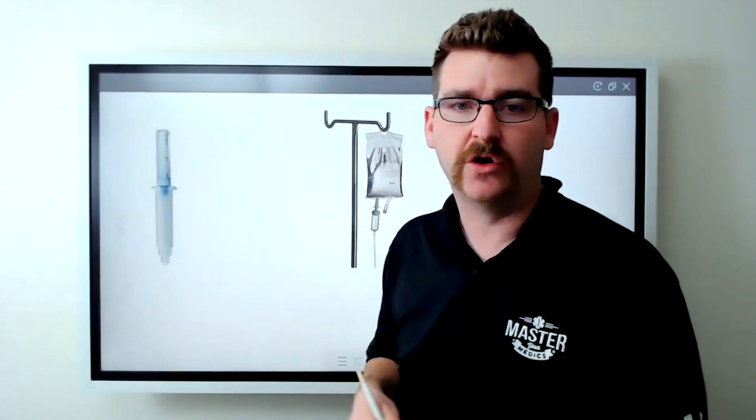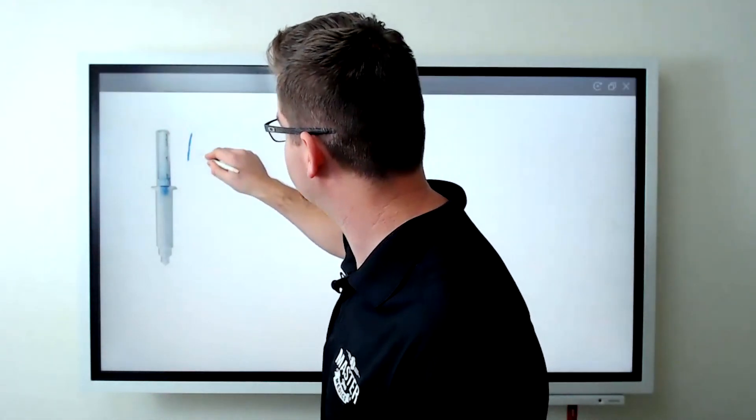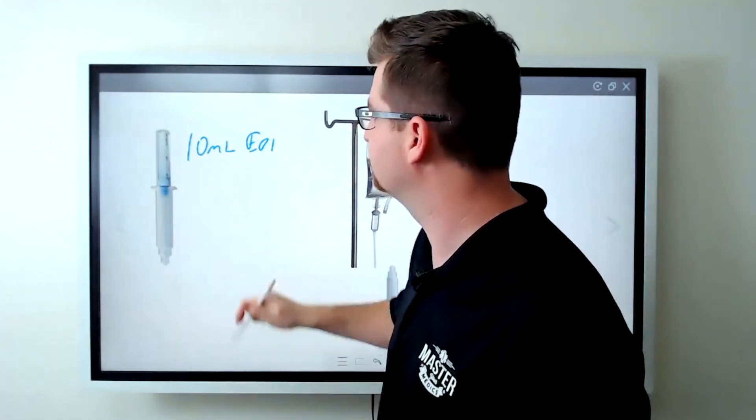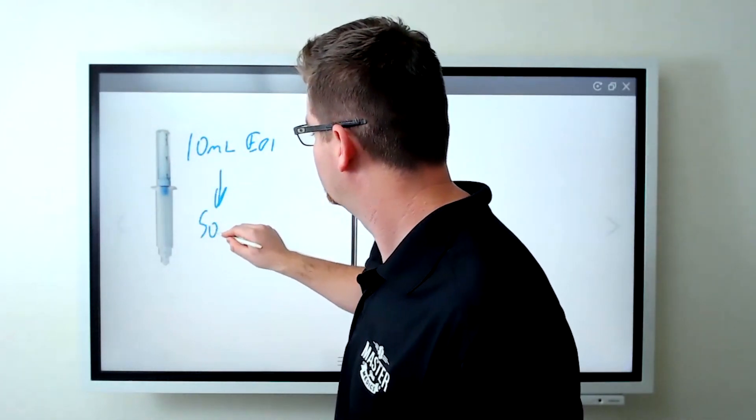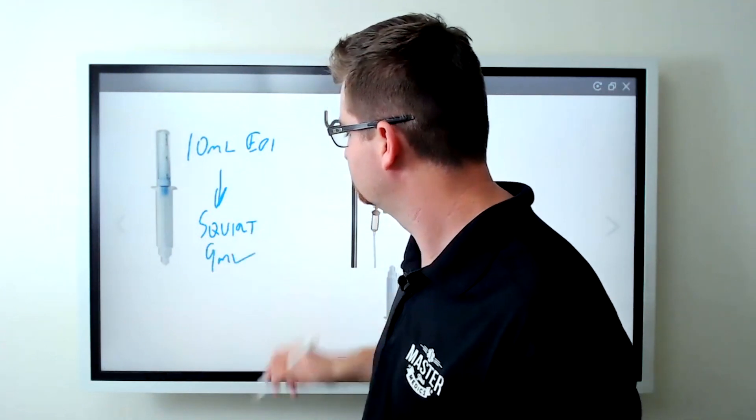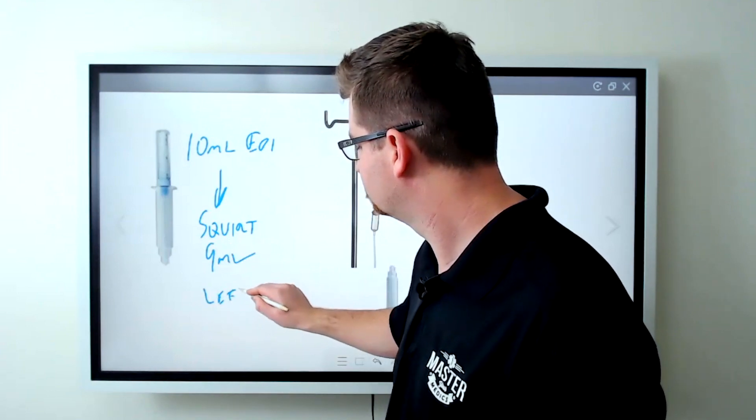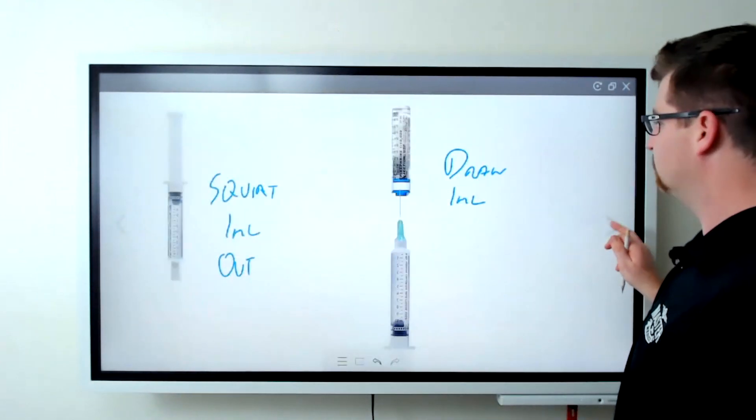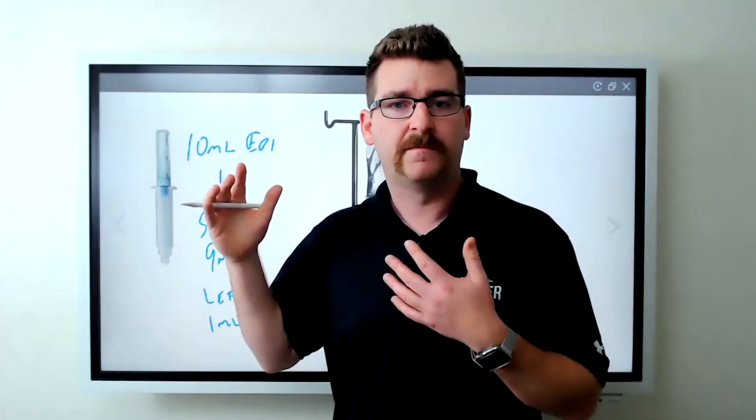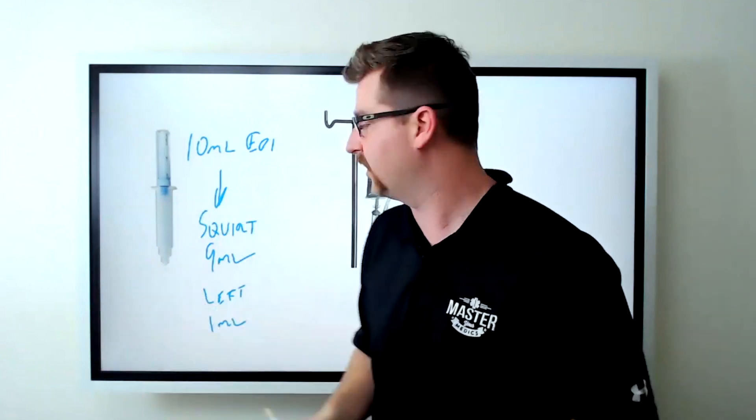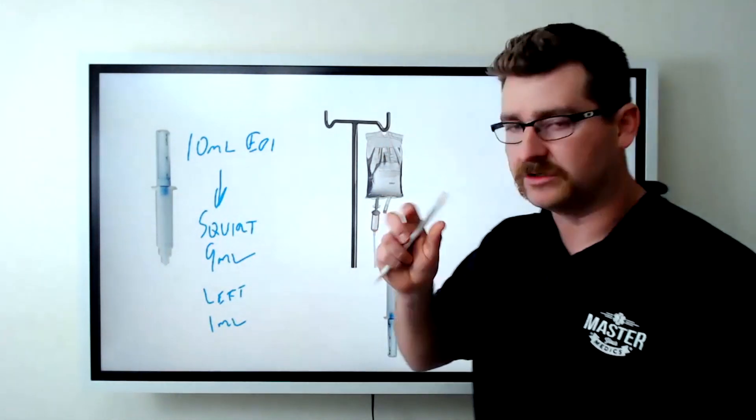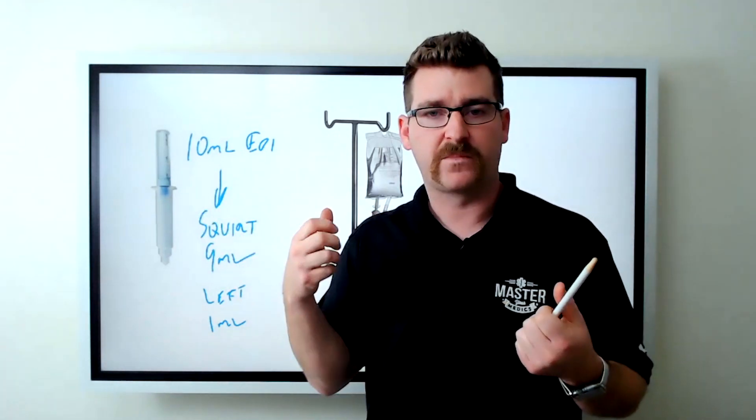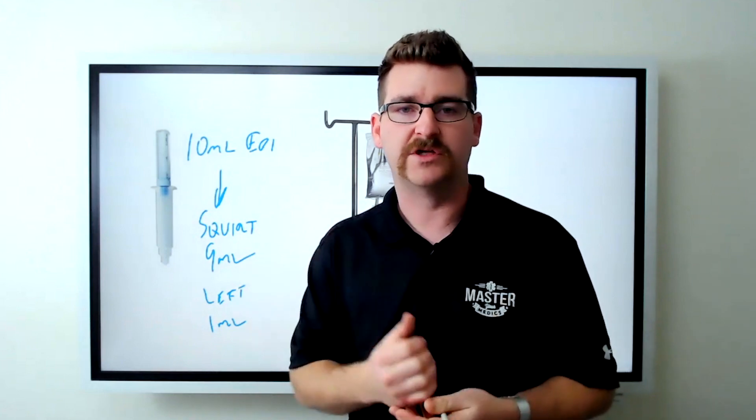Now, the other way too, is you can take your preload that you already have and you squirt. This is cardiac epi, or one to 10,000 as some people still call it. And you actually squirt out 9 ml. So now you have left 1 ml. We're doing the same exact thing. We're getting our 1 ml of that cardiac epi. And then all we have to do is hook up to the line. You can just use your luer lock, hook up to the line and pull out 9 ml of saline right into the same exact cardiac epi vial that you are already using.